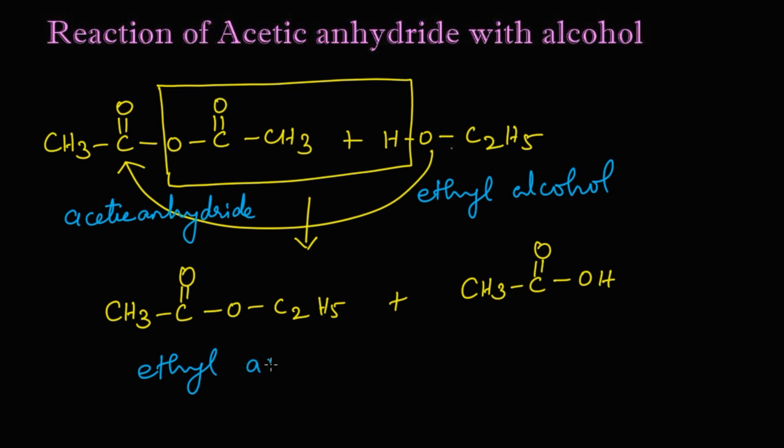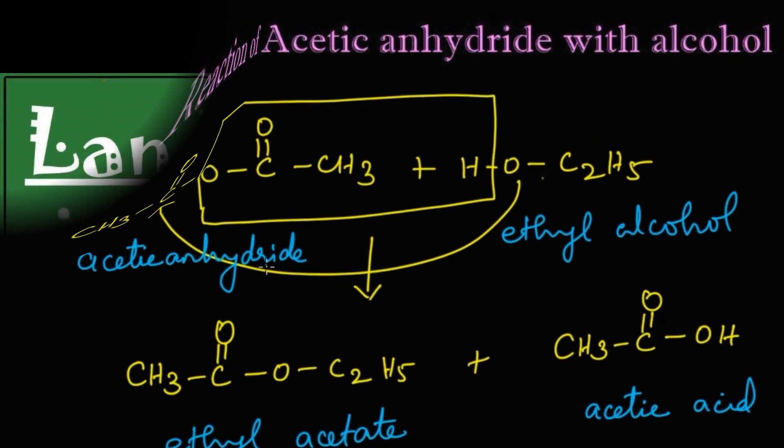And acetic acid. Let's summarize the reaction: when acetic anhydride reacts with alcohol it forms an ester, that is ethyl acetate and acetic acid as the product. The reaction takes place in this way as I explained. Thank you.